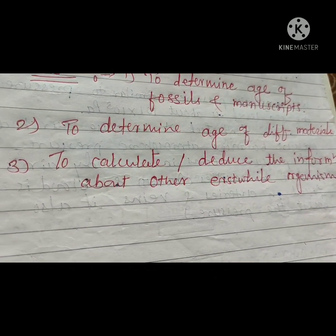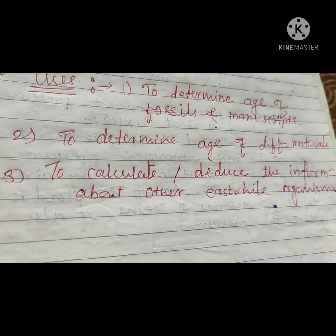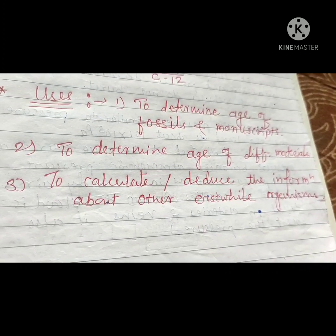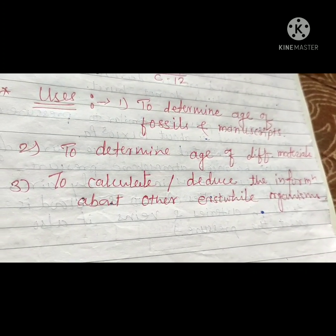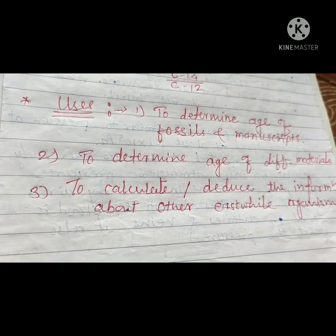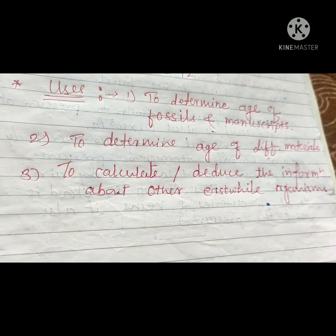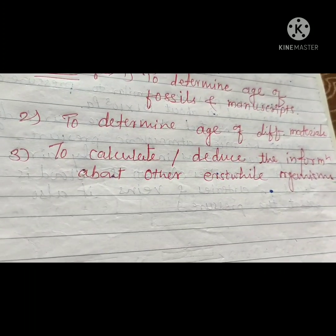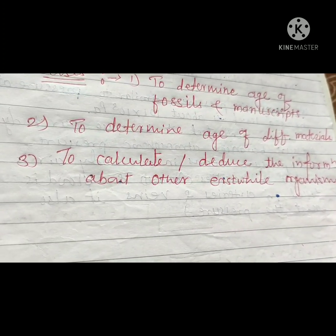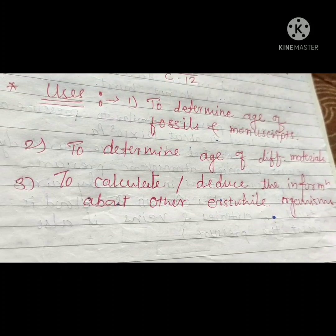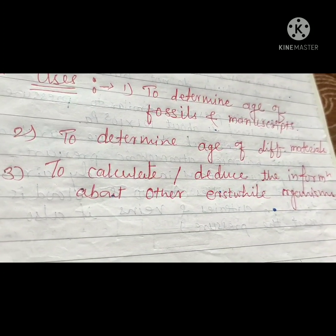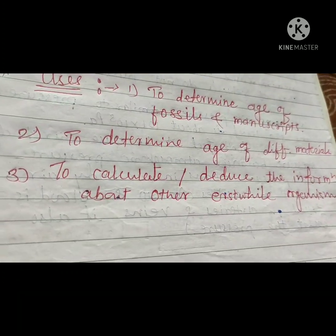The second use of this method is to determine the age of different ancient materials. Ancient materials are always found when digging the earth or during construction. At that time, to determine the age of these different materials, carbon dating technique is used. The third use is to calculate the age of different materials and also to deduce information about other erstwhile organisms.